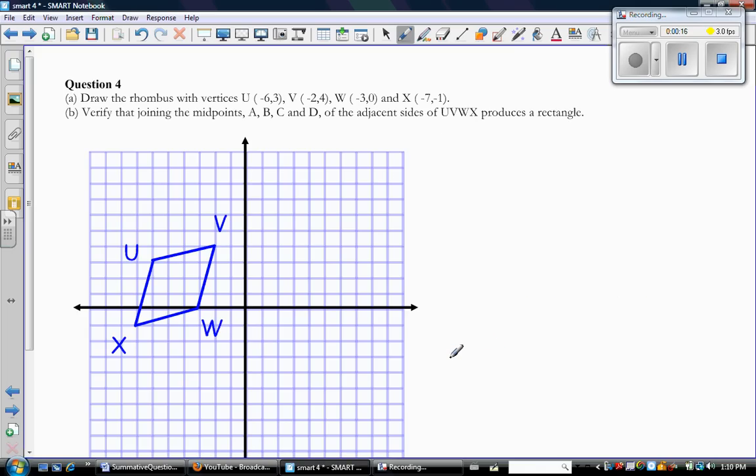So here's that question. It says draw the rhombus with vertices at U, V, W, and X. So here they are, U, V, W, X. And I connected them with a ruler and there's my rhombus. That definitely looks like a rhombus because it's a parallelogram in which all sides are the same length. So that was easy.